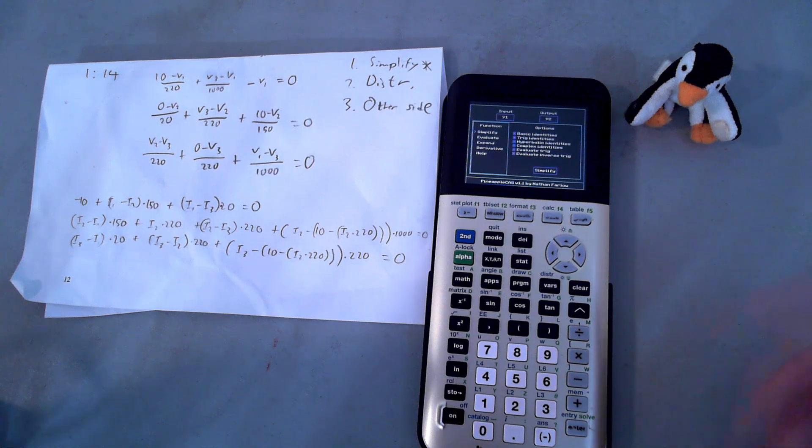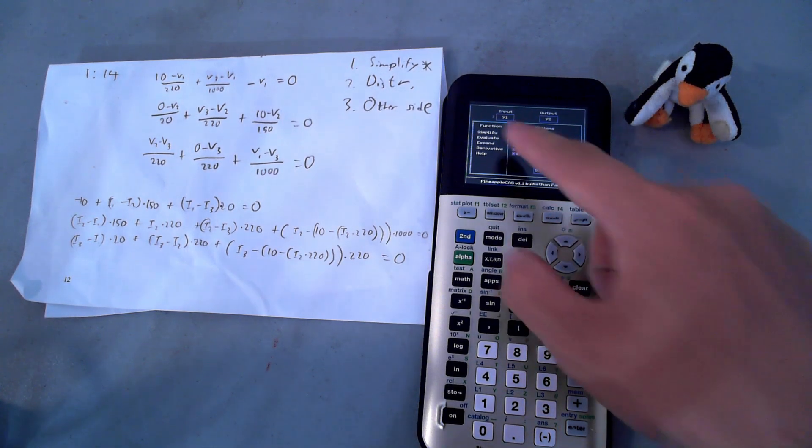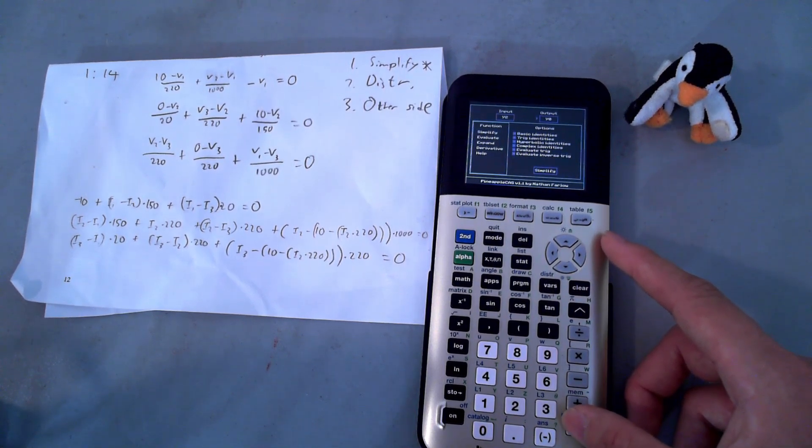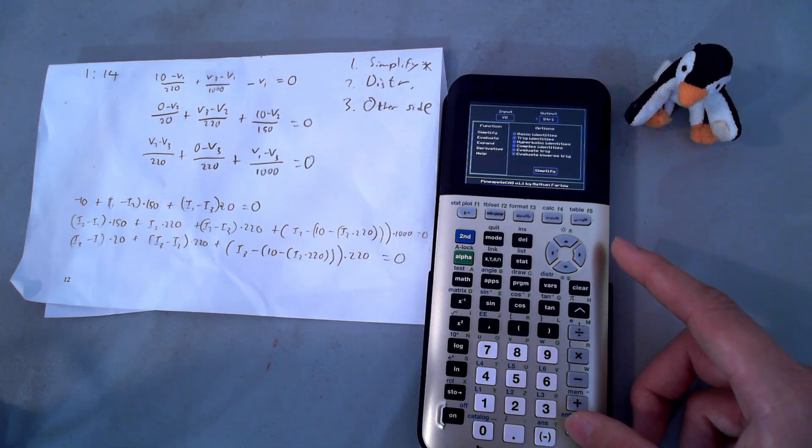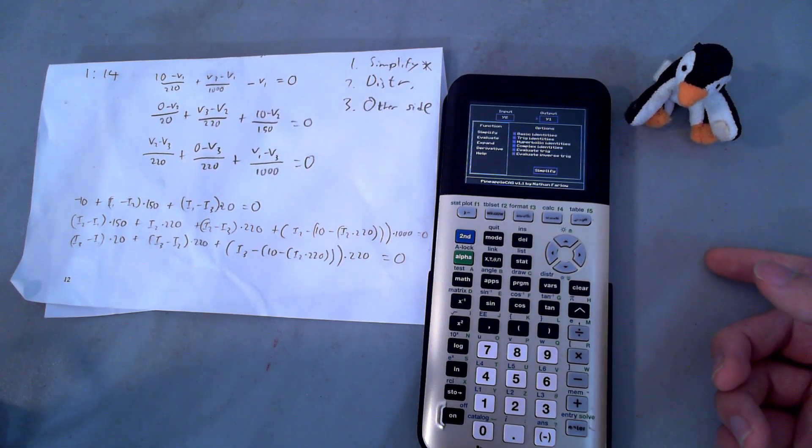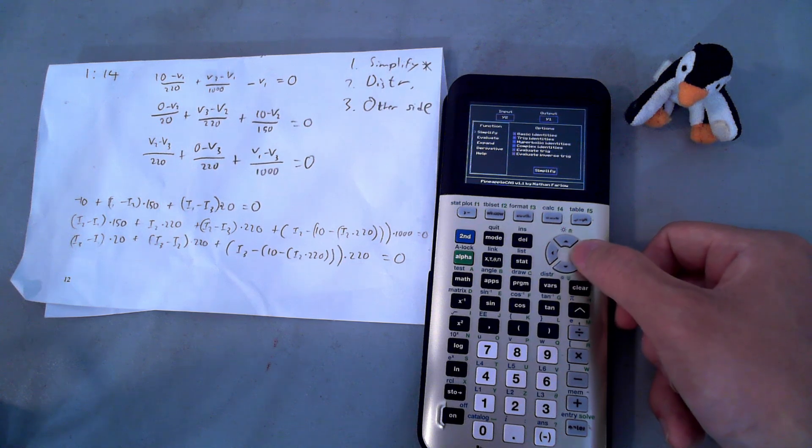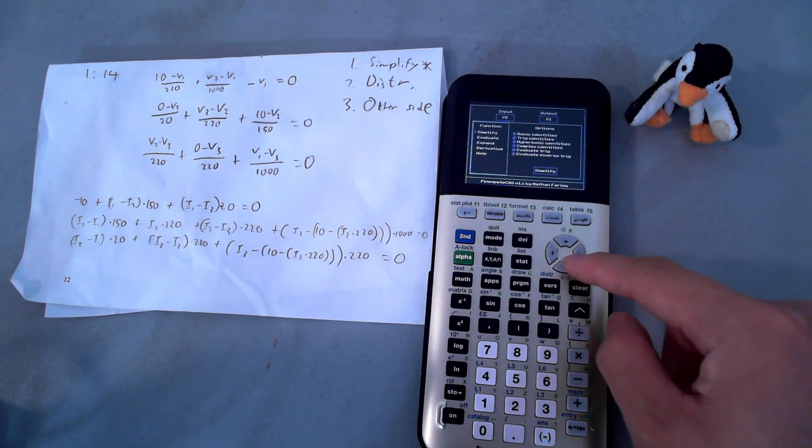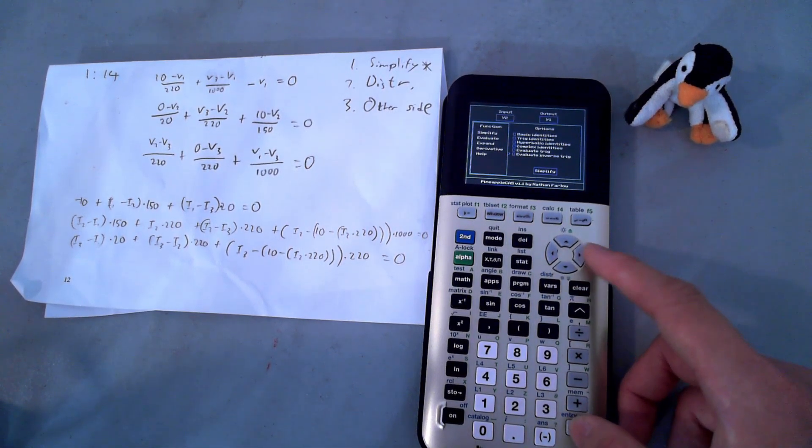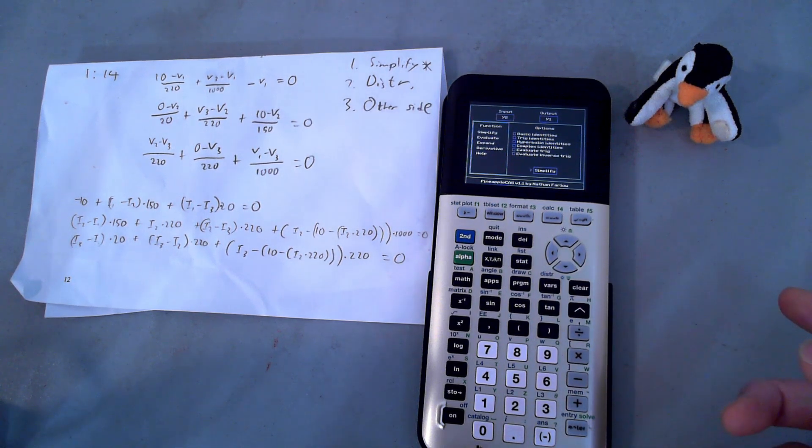And what we're going to do is we're just going to go ahead and right away run PCAS. Now, when we run PCAS, we need to tweak a few things. We're going to go ahead and change the input into line Y2 and change the output into line Y1. You're going to have to press the Enter key a few times. Now, we're going to go down and we're going to go right so that we can uncheck all of these checkboxes. Hit Simplify and it's going to take a few seconds.